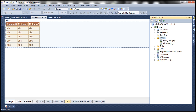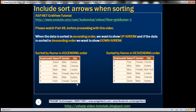Now, what event are we going to use to achieve this? I'm going to make use of the RowCreated event. When is this RowCreated event fired? The RowCreated event is fired whenever a row within the GridView control is created. The header is also a row within the GridView control, so when the header row is created, this event is fired. We're going to make use of this RowCreated event.